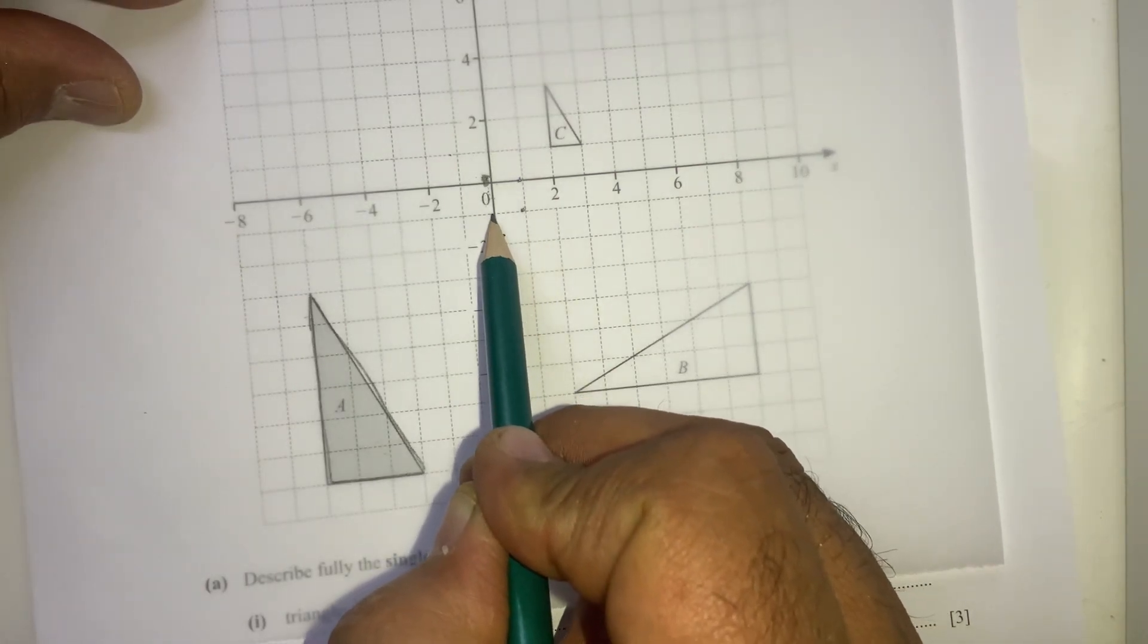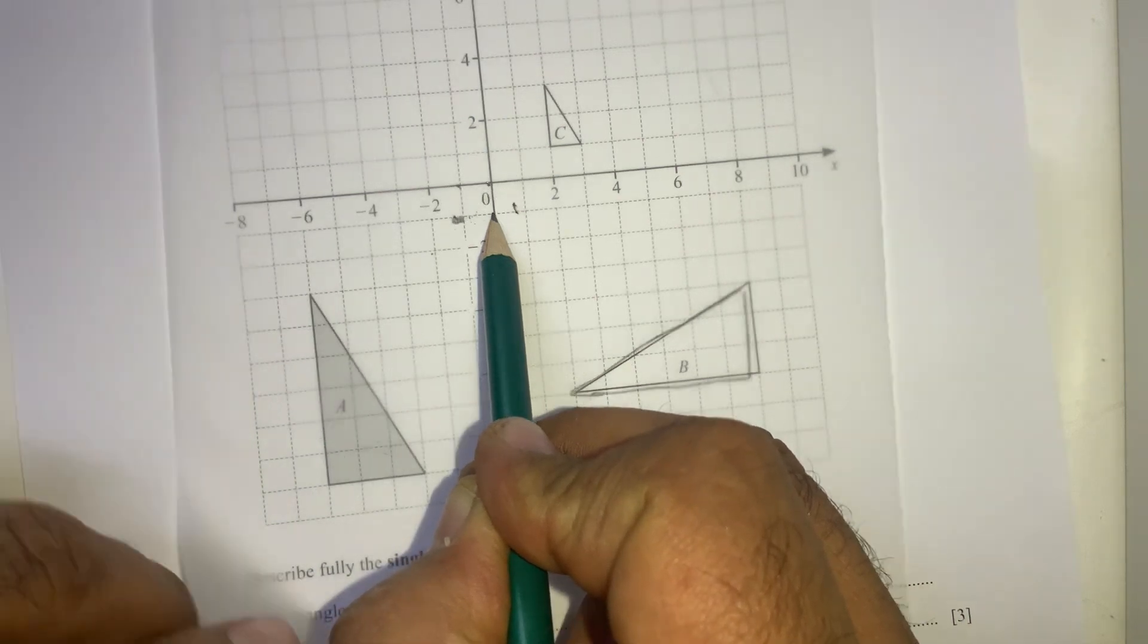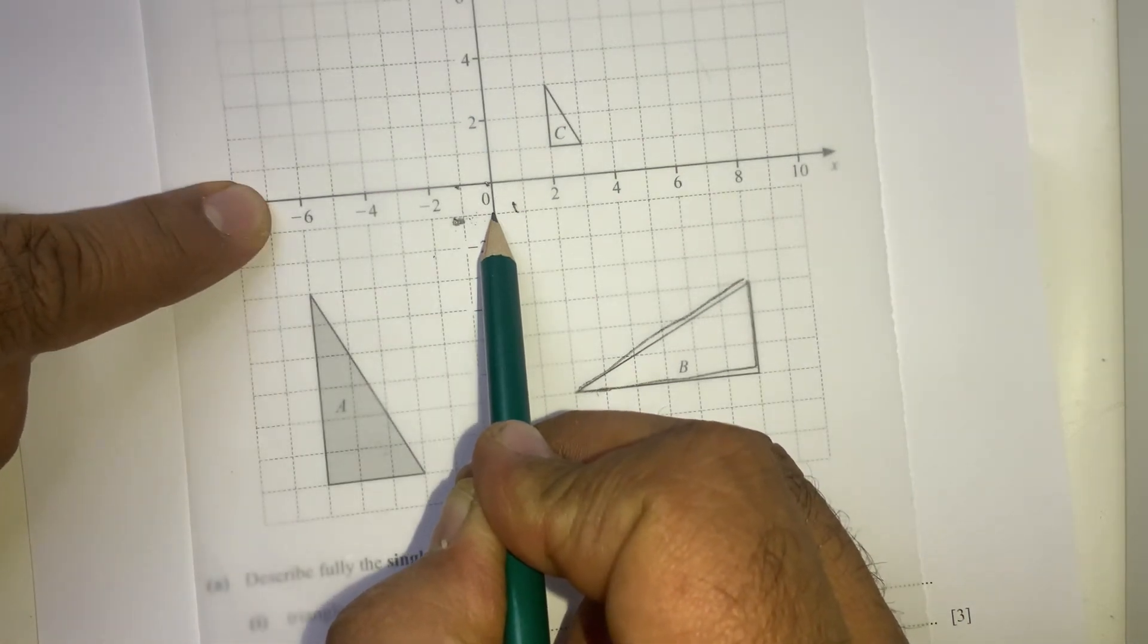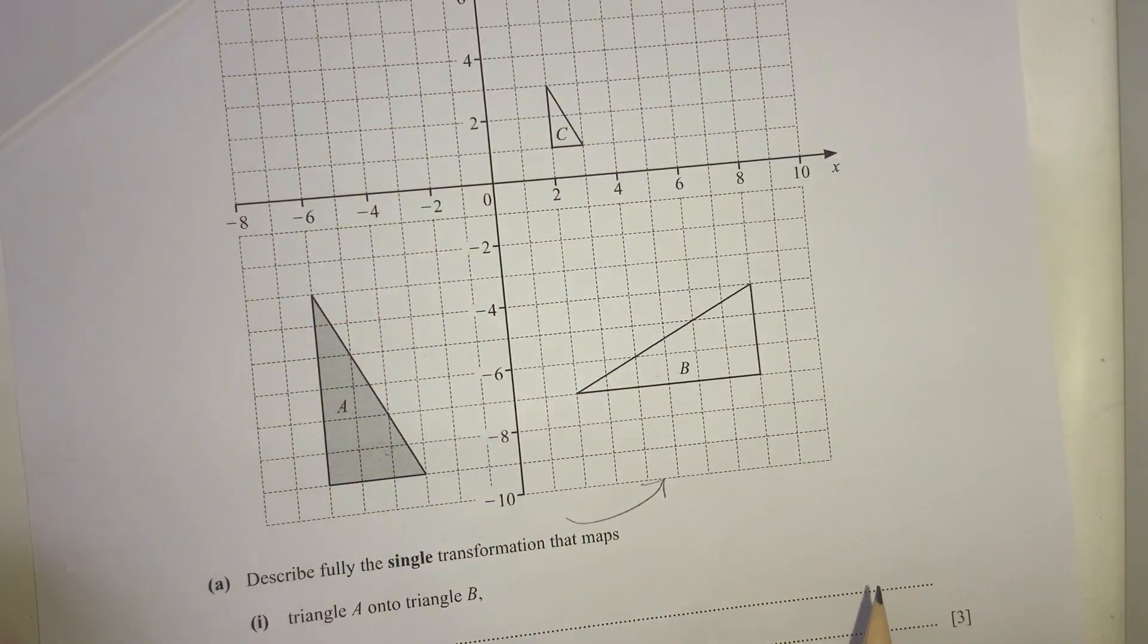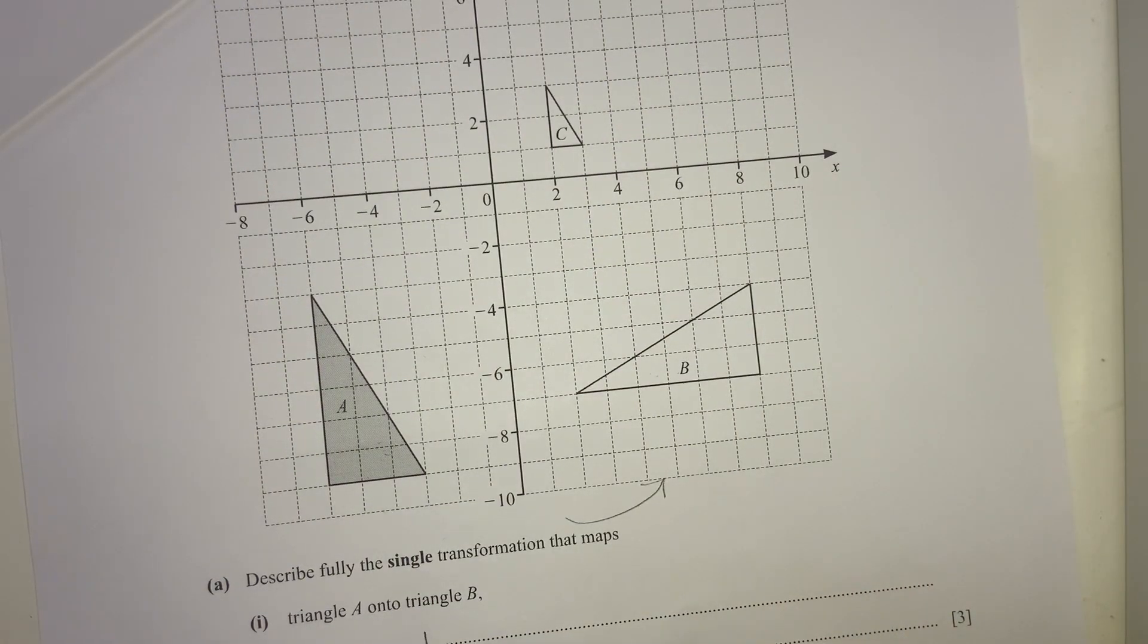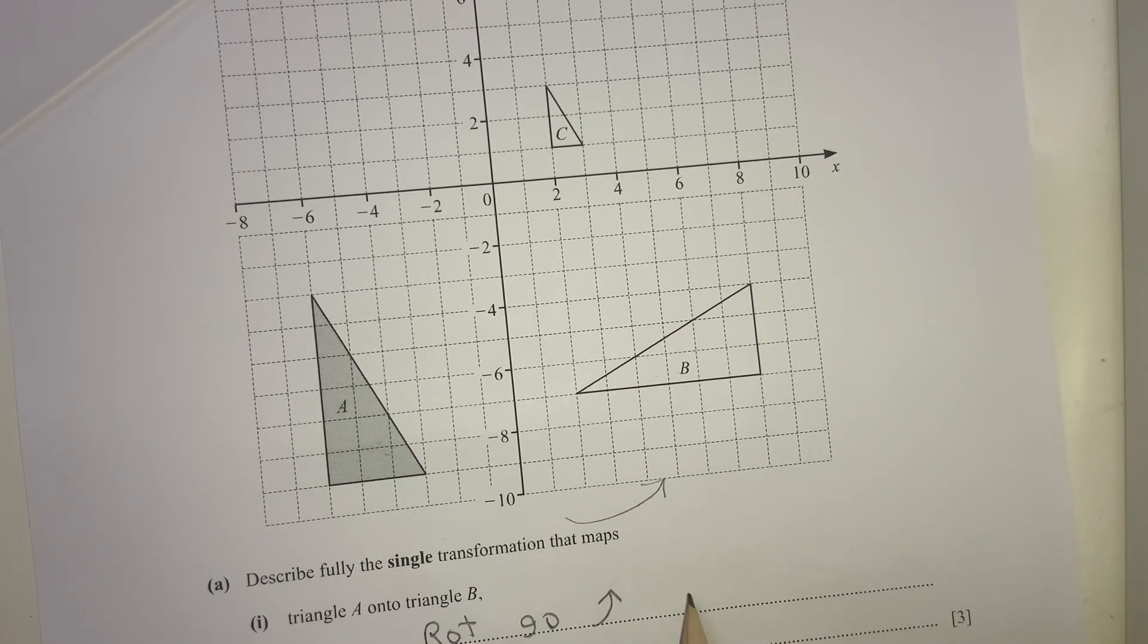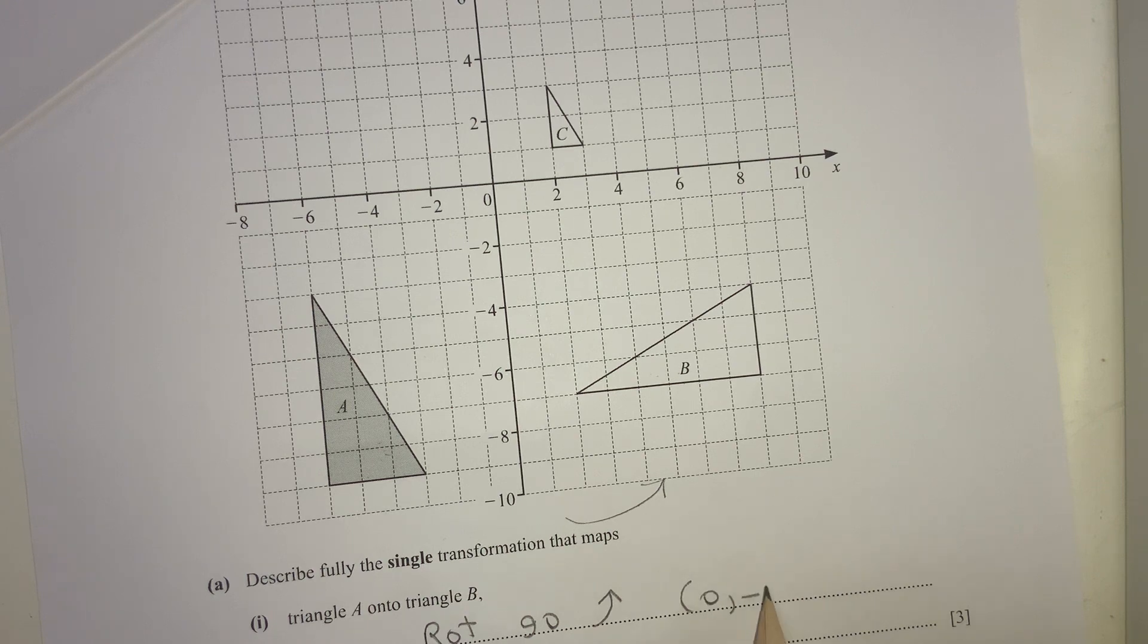Now we can try this point 0 negative 1. It does work. So the center of rotation is 0 negative 1. So this is a rotation 90 degrees anti-clockwise, center of rotation 0 negative 1.